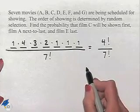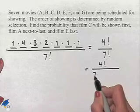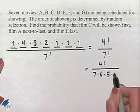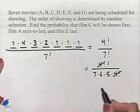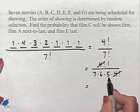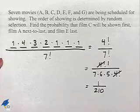Now let's simplify. We can write this as four factorial divided by seven times six times five times four factorial. The four factorial will divide out, and we're going to multiply in order to come up with one divided by 210 as our probability.